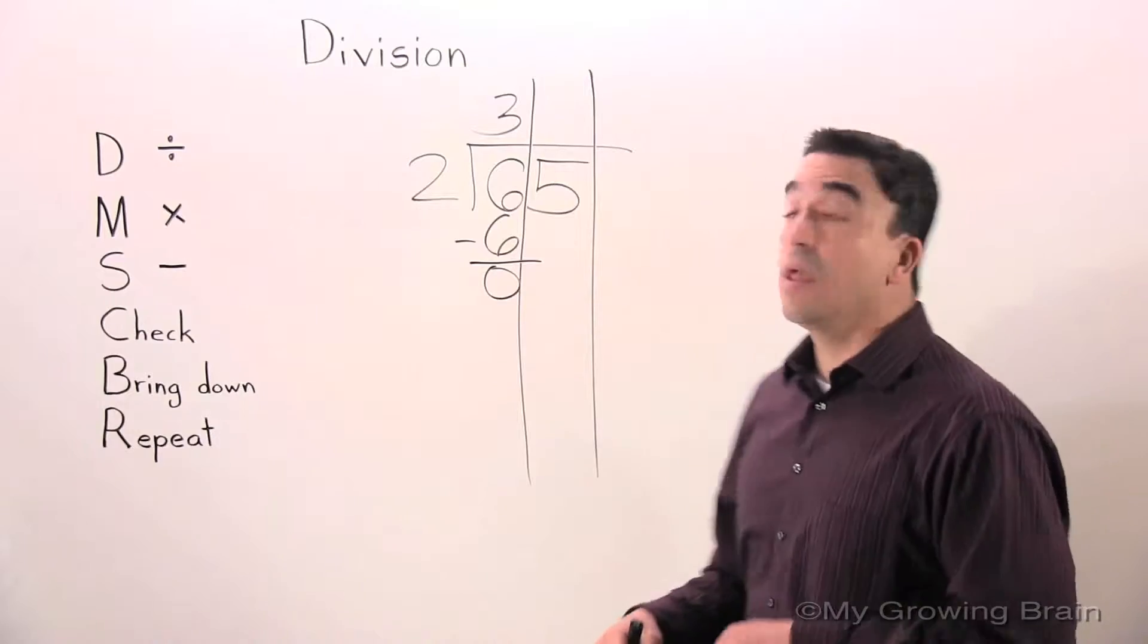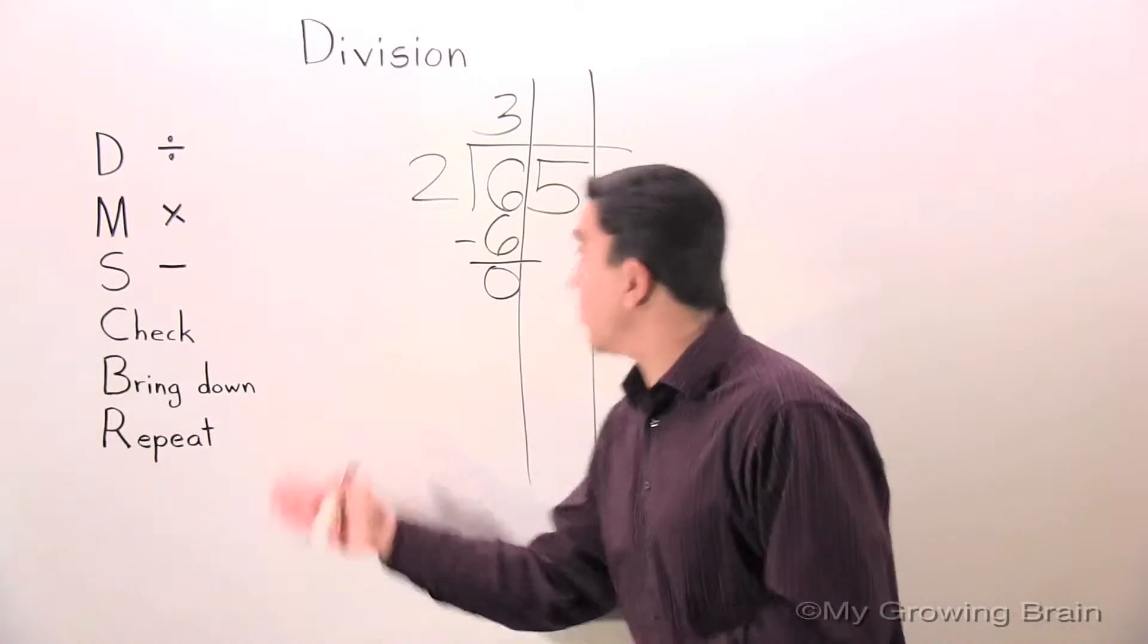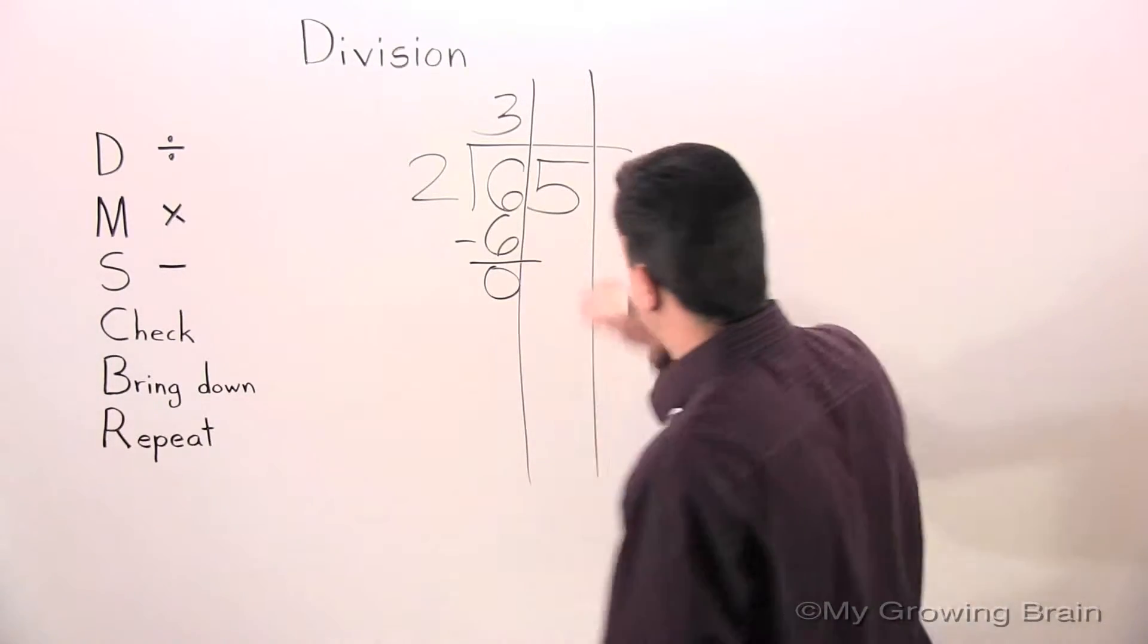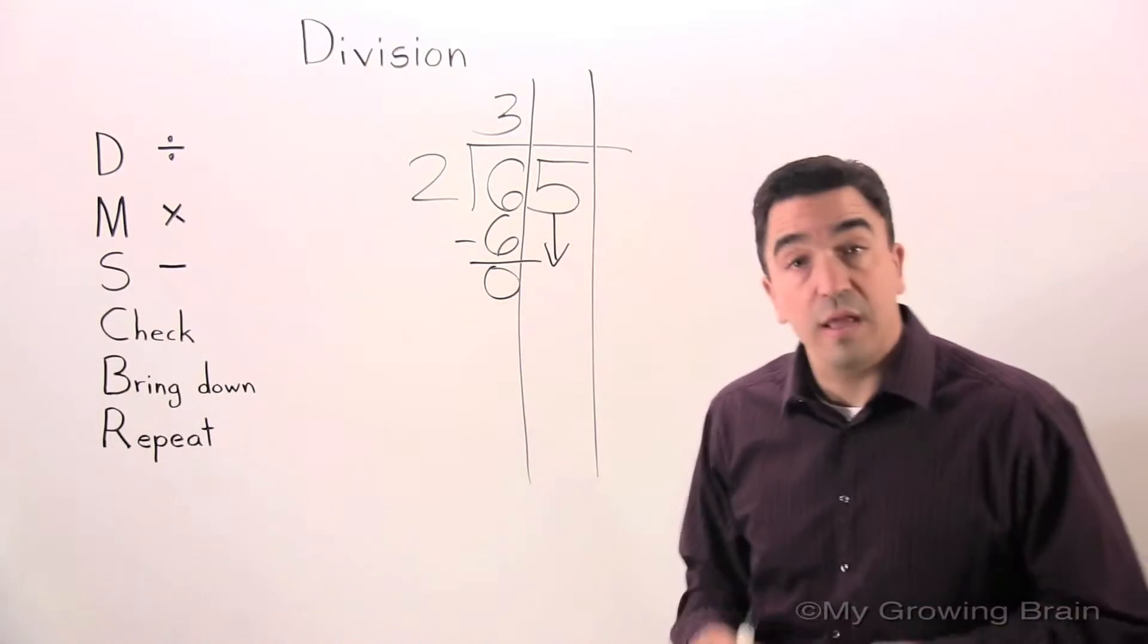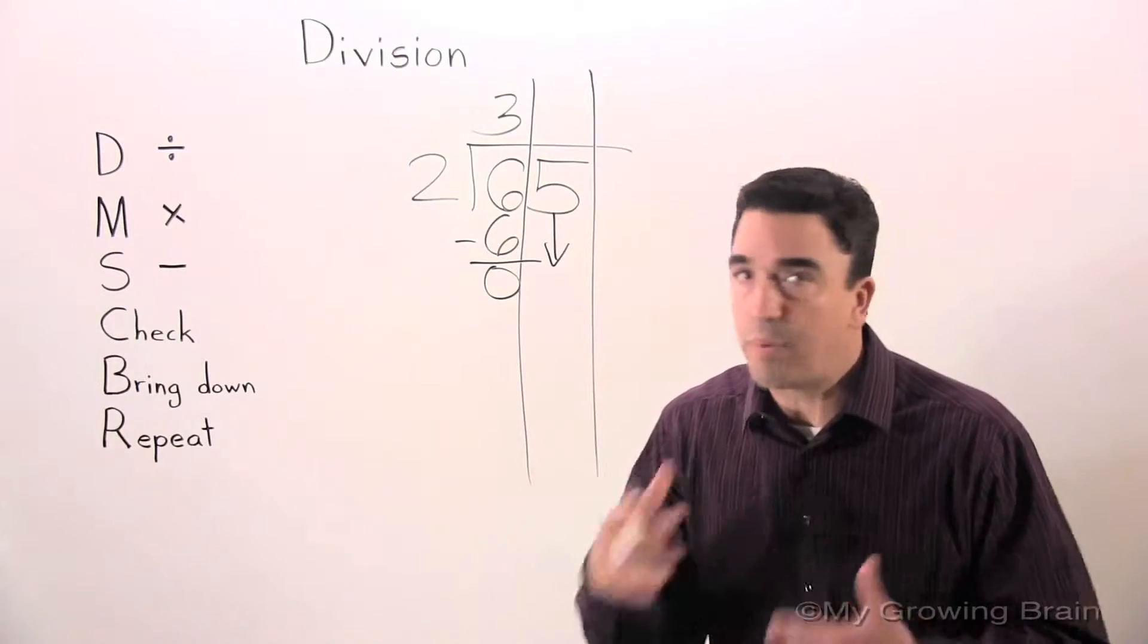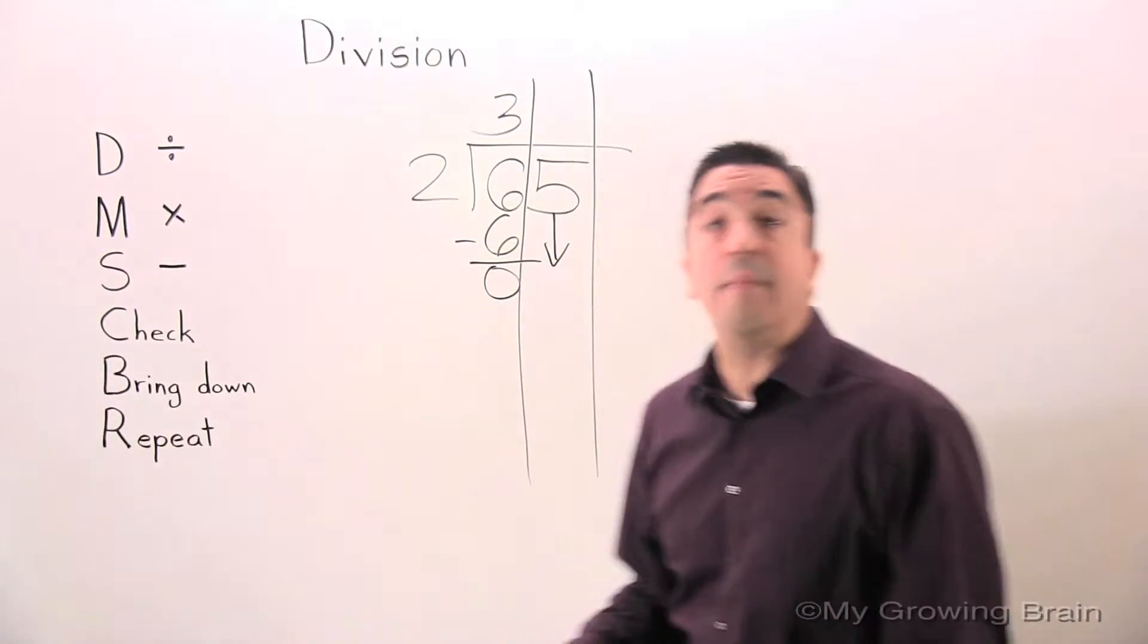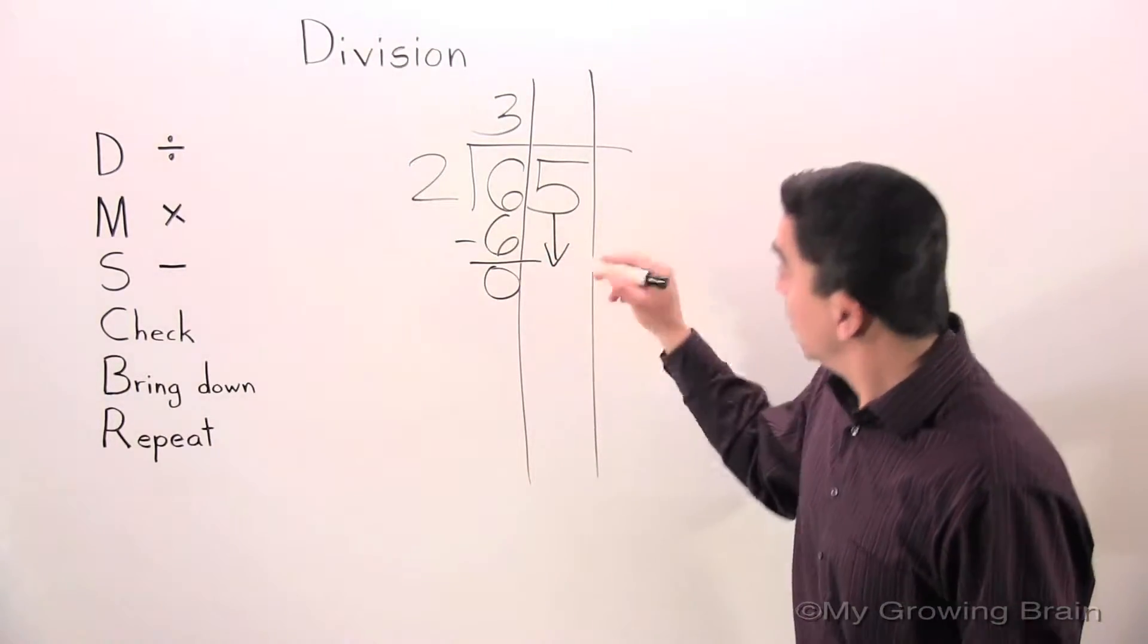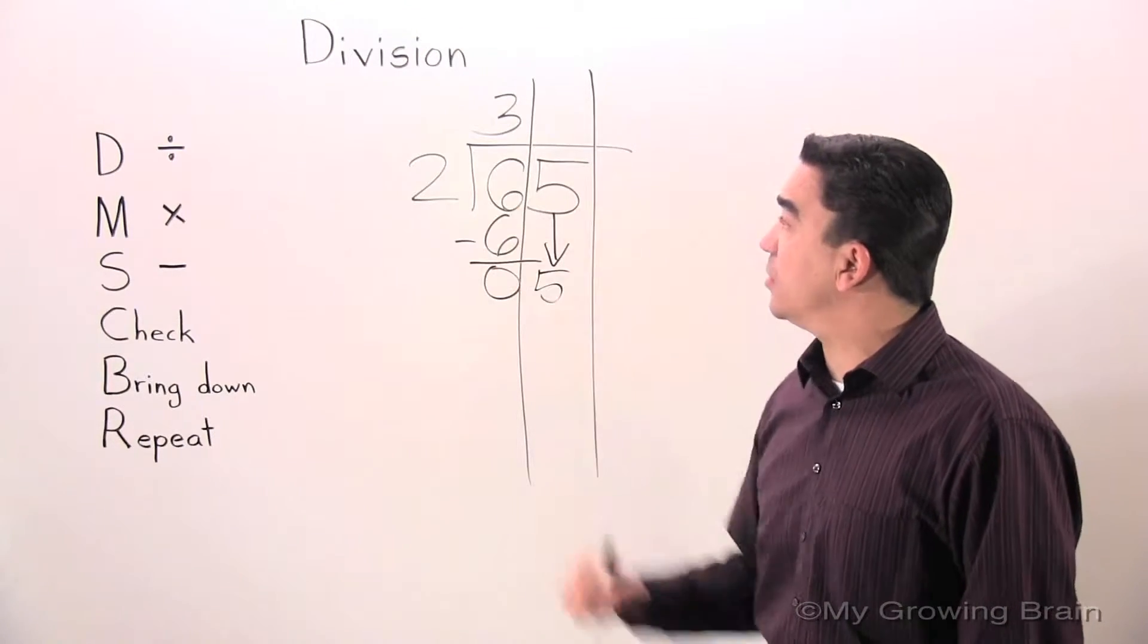Next step, bring down the 5. Now, next step is repeat. Keep the process going. Back to the top. Divide. Oh, got to put our 5 there. 5 divided by 2.